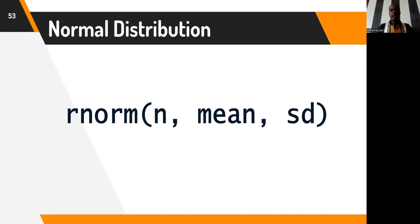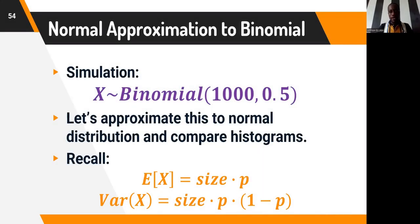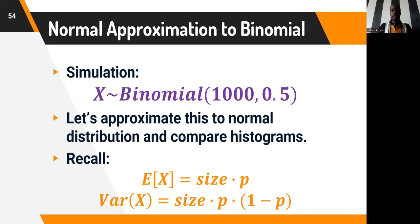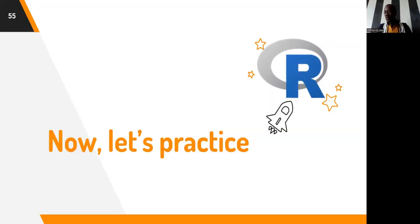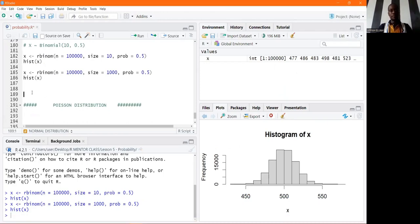R provides the rnorm function, which takes in three sets of arguments: n is the number of observations (which we call the number of draws), then the mean, and then the standard deviation. We are going to look at the normal approximation to the binomial distribution. We will simulate a binomial distribution of 1,000 coin flips with a 50% chance of getting heads, then approximate this to a normal distribution and compare the histograms. We need to recall that the expected value of a binomial distribution x is the size times the probability, and the variance is size times probability times 1 minus probability.